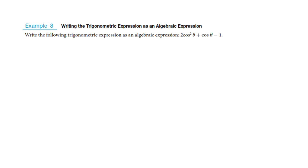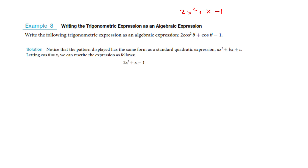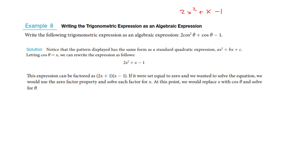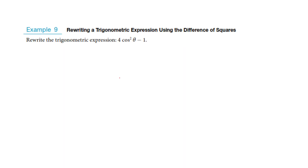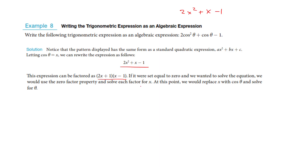The last portion shows that we can do algebra on trig expressions just like we would with x's. If I had 2x squared plus x minus 1 I could factor it, and just because it involves cosines doesn't change anything — we follow the exact same patterns. This is an AC method problem, so it's a little less natural, but it factors down the same way it would if these were just x's.